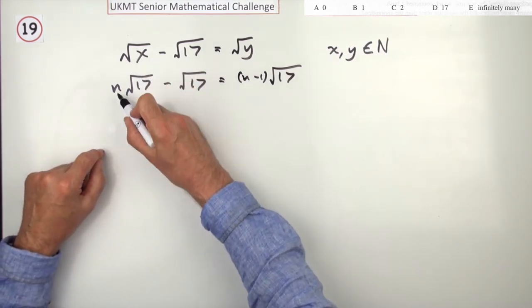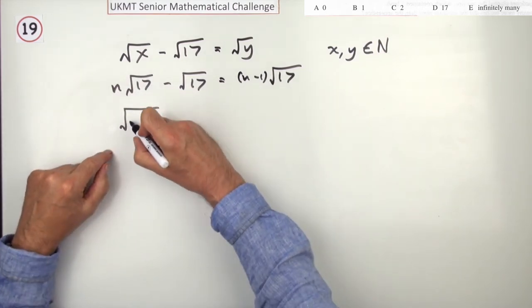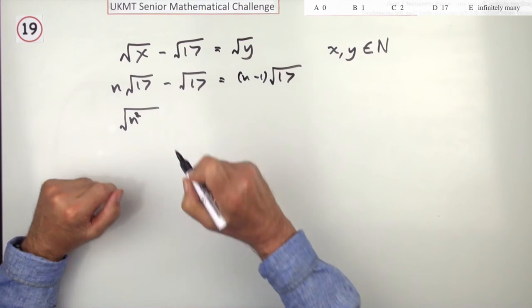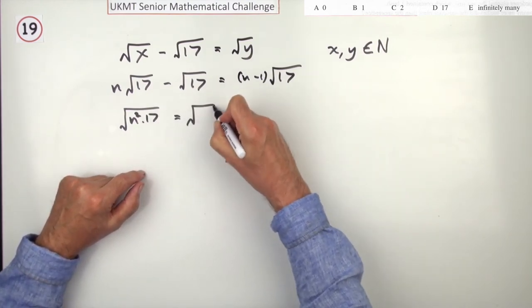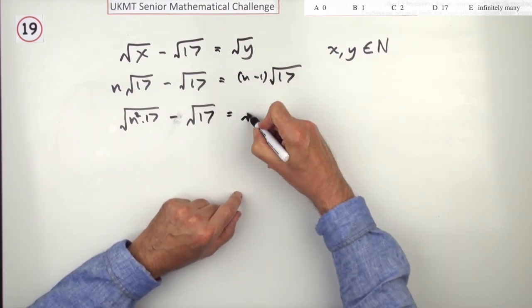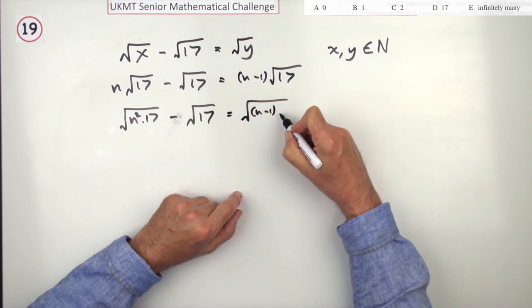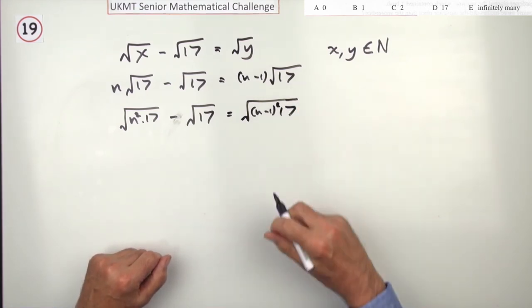So, because to get x itself, I'll have to pop that inside. So, for that n to go inside the root, you'll have to get dressed up and be n squared. So, that's n squared times √17. That's still √17, but that was a minus. And that's going to be n minus 1 times √17 squared.